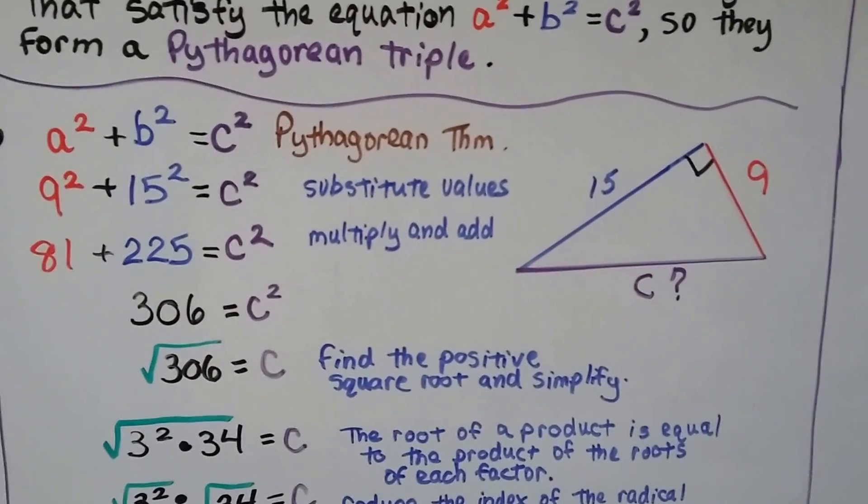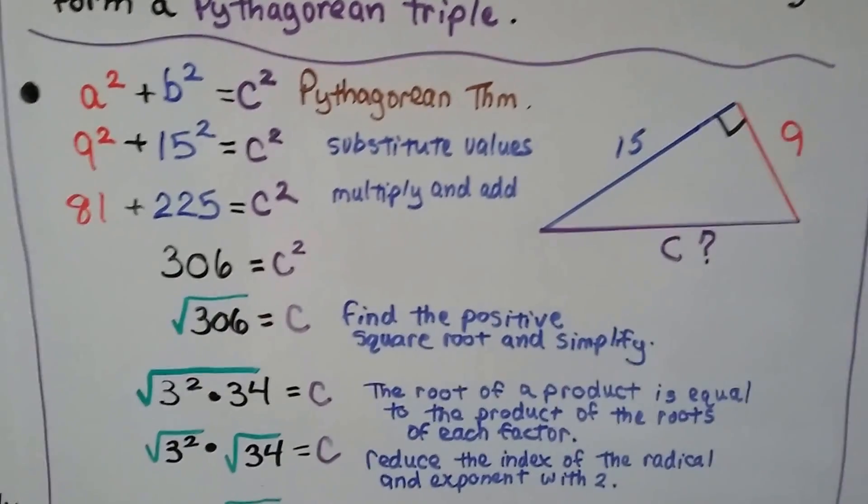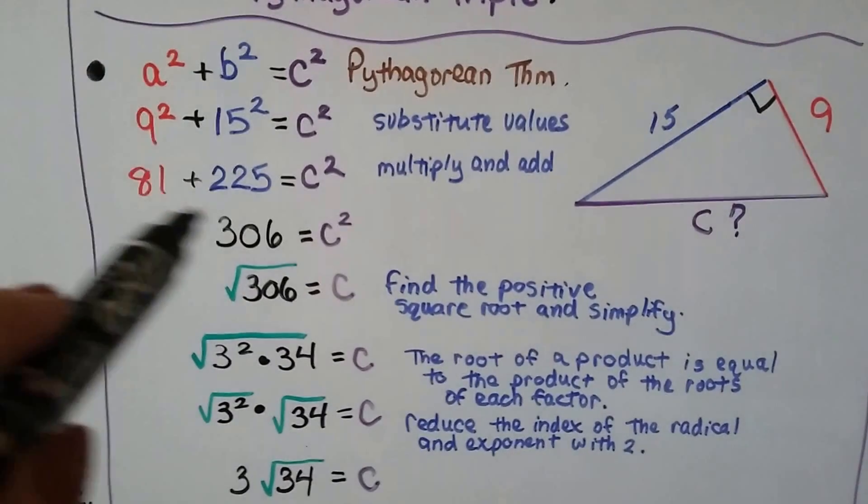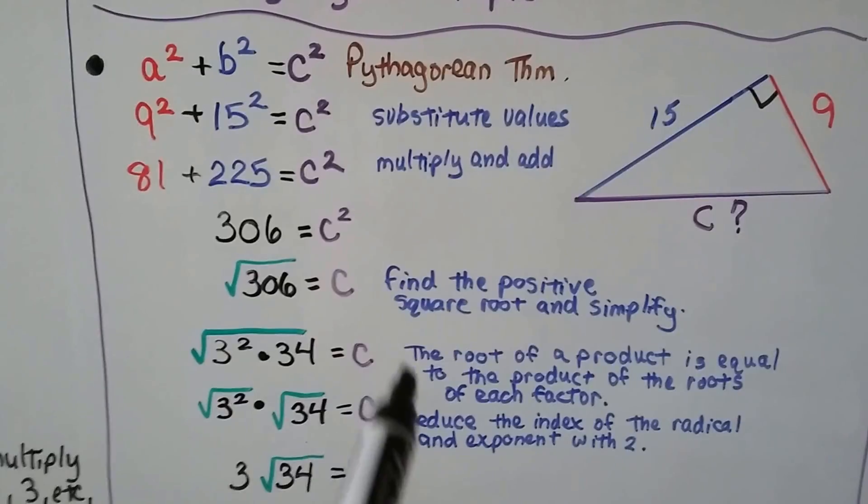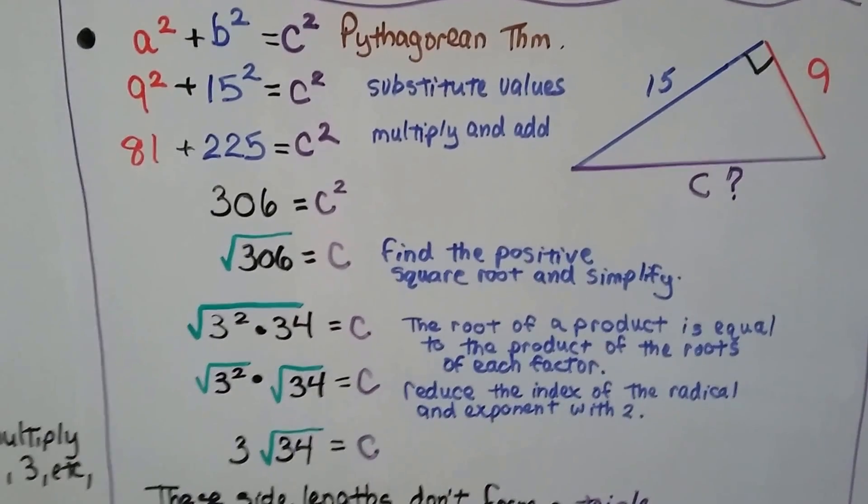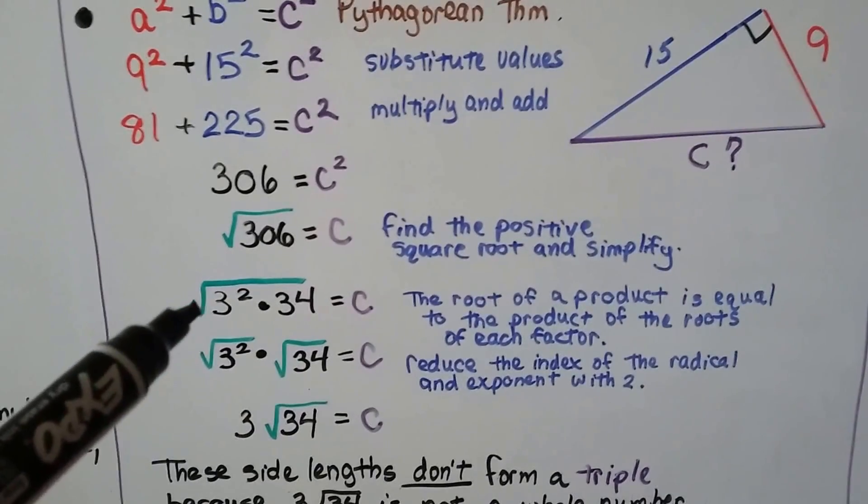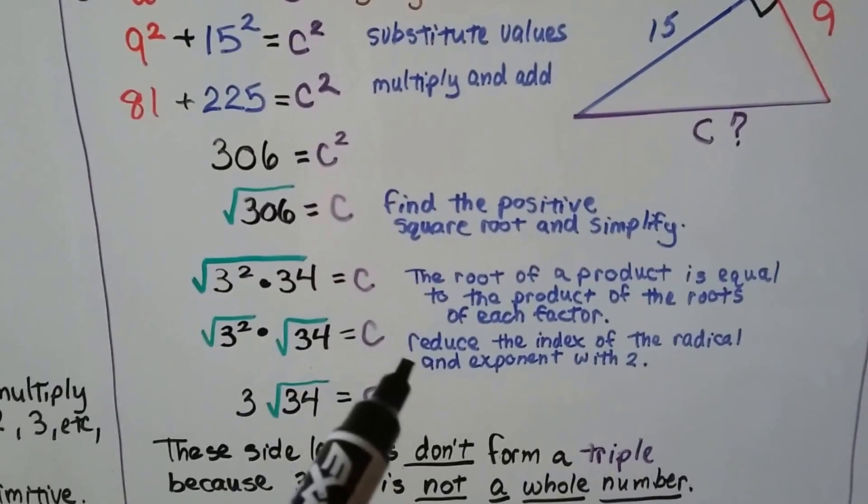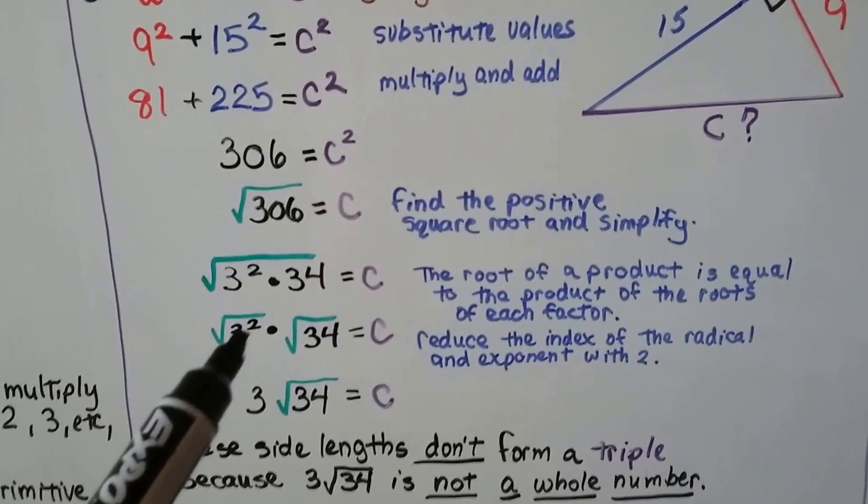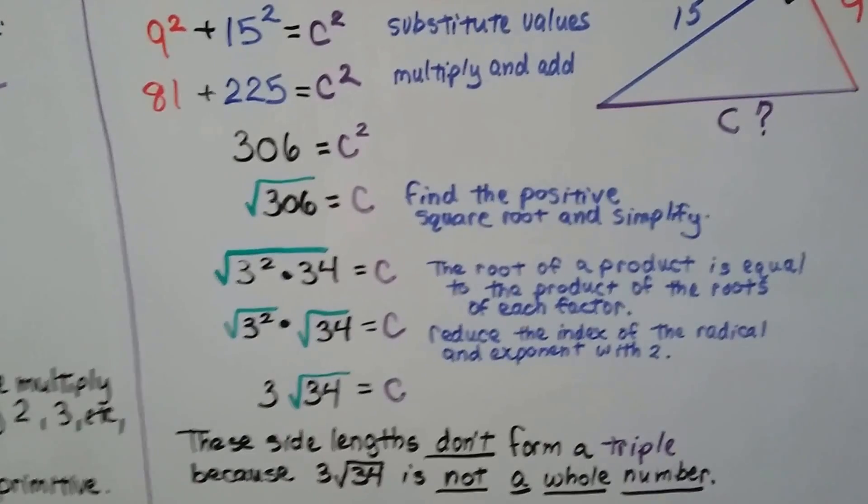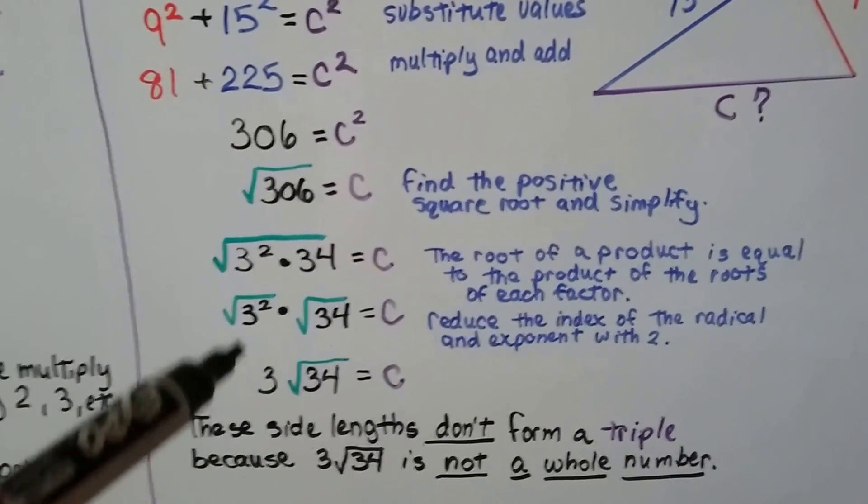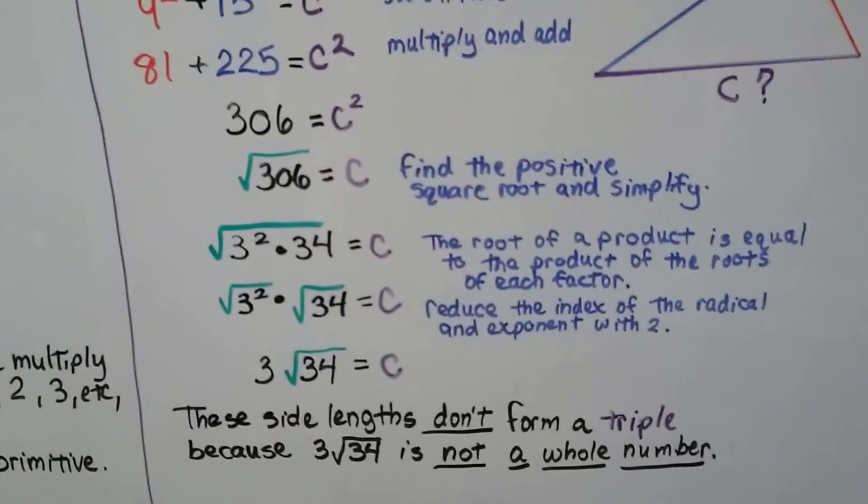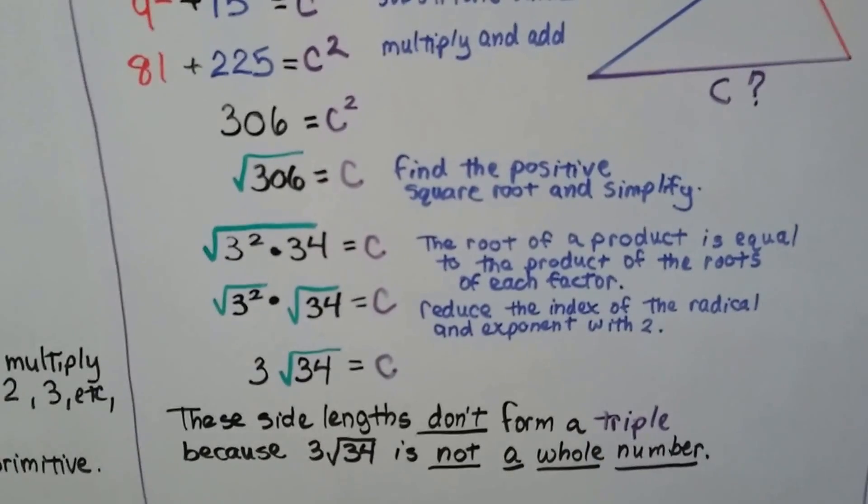Take a look at this one. Our a is 9, our b is 15, but we don't have our hypotenuse. We substitute the values in. We have 9 squared plus 15 squared equals c squared. Well, this is 81. This is 225 and it equals c squared. When we add these two together, we get 306. We can take this little two exponent off by putting a radical sign around this side and find the positive square root and simplify. 306 is equal to the square root of 3 squared times 34. And remember, the root of a product is equal to the product of the roots of each factor. So we've got the square root of 3 squared times the square root of 34. And we can reduce the index of the radical and exponent with 2. So we take off this little exponent and the square root sign, and we get 3 square root of 34. Now the side lengths don't form a triple because 3 square root of 34 is not a whole number. So it didn't work.